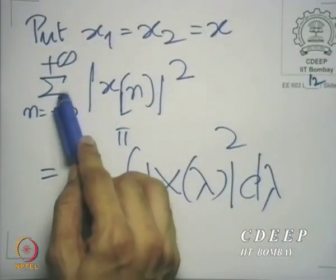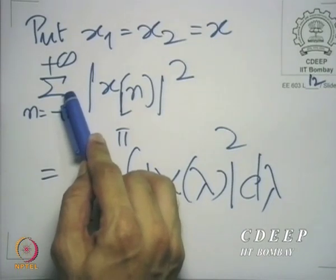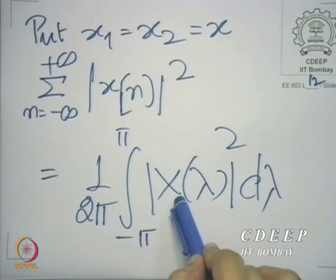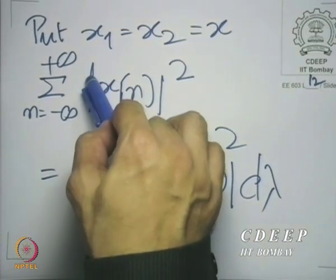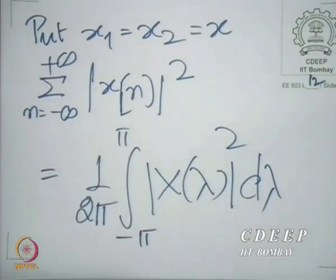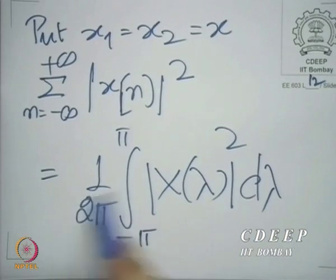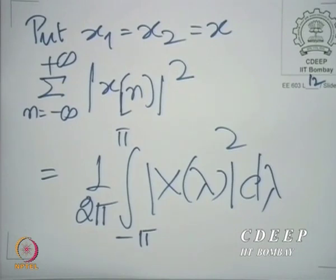The norm squared — mod x[n] squared summed over all n — is the norm squared of the sequence. That same norm squared can be calculated in the frequency domain. The physical interpretation is that you have taken the dot product of the sequence with itself, so you are getting the magnitude squared, which is the norm squared.